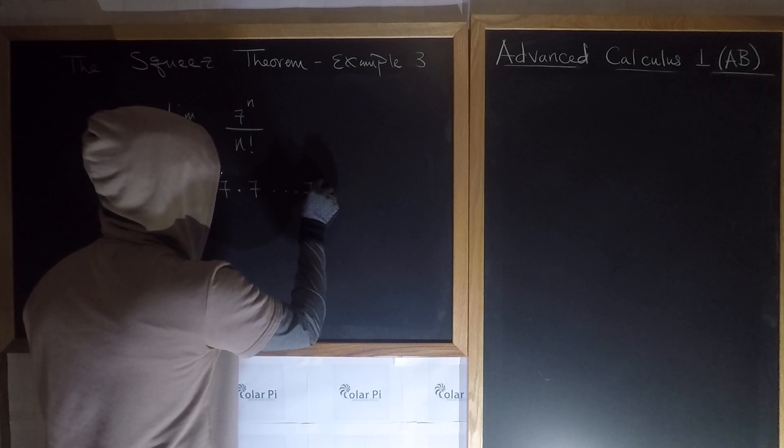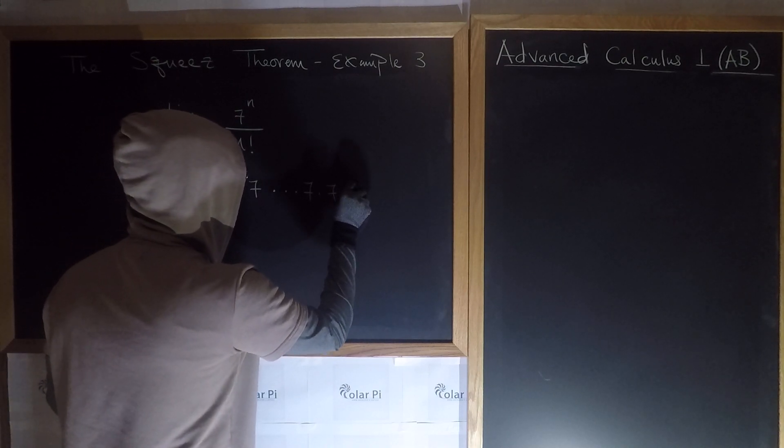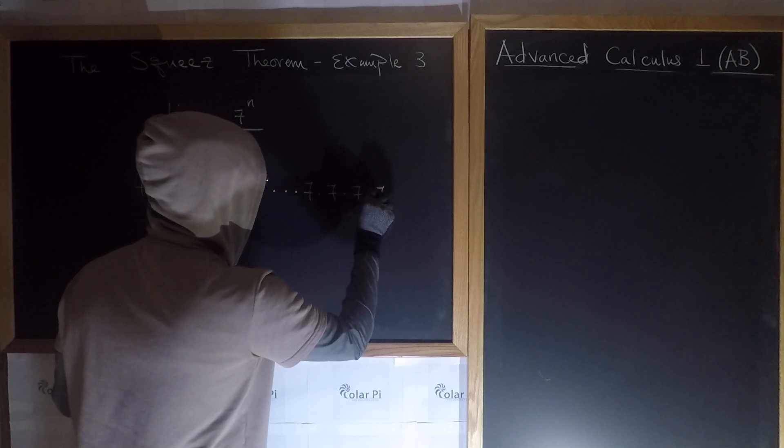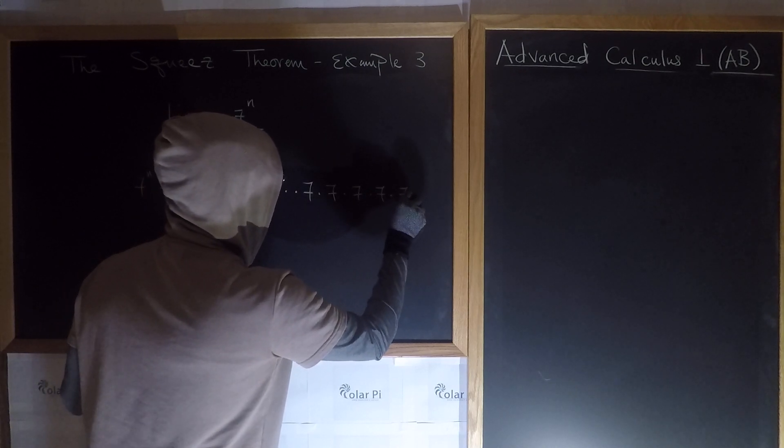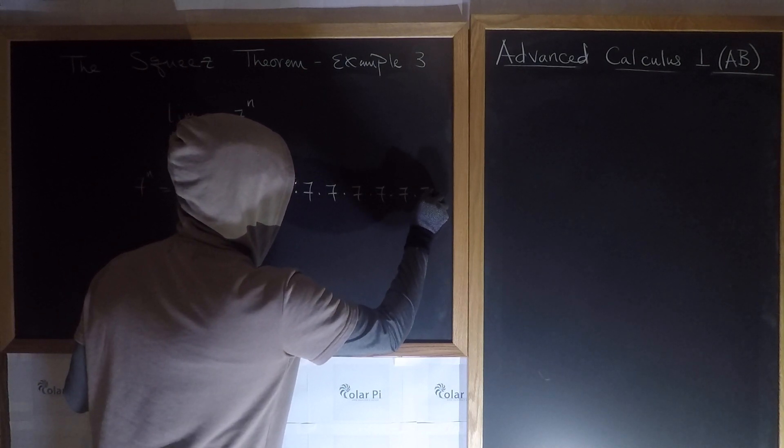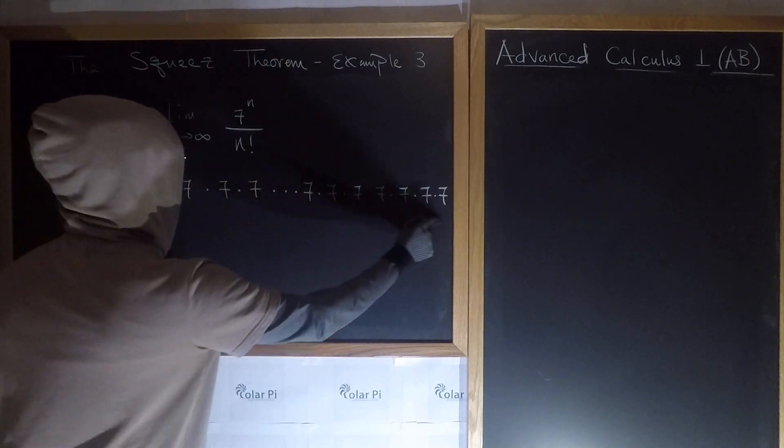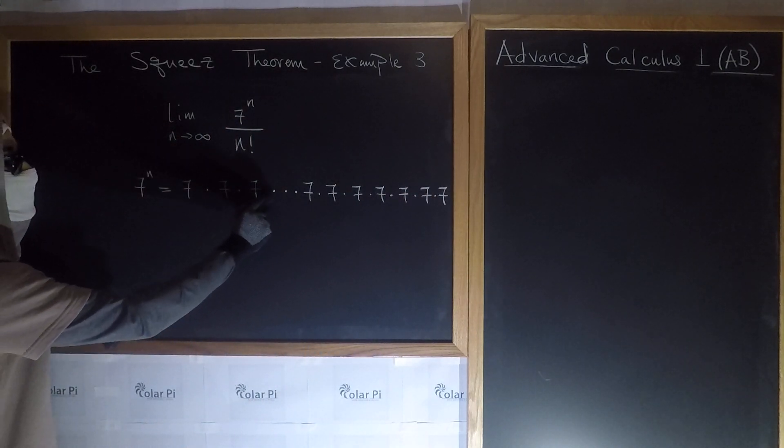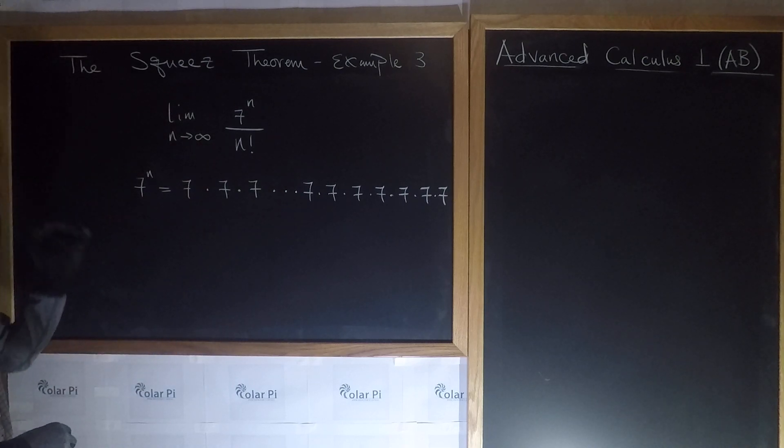So 7 times 7 times 7, 4, 5, 6, 7. So I've got 7 7s here, and 3 7s here, and a bunch of 7s in between to make n 7s. That's what 7 to the n is.